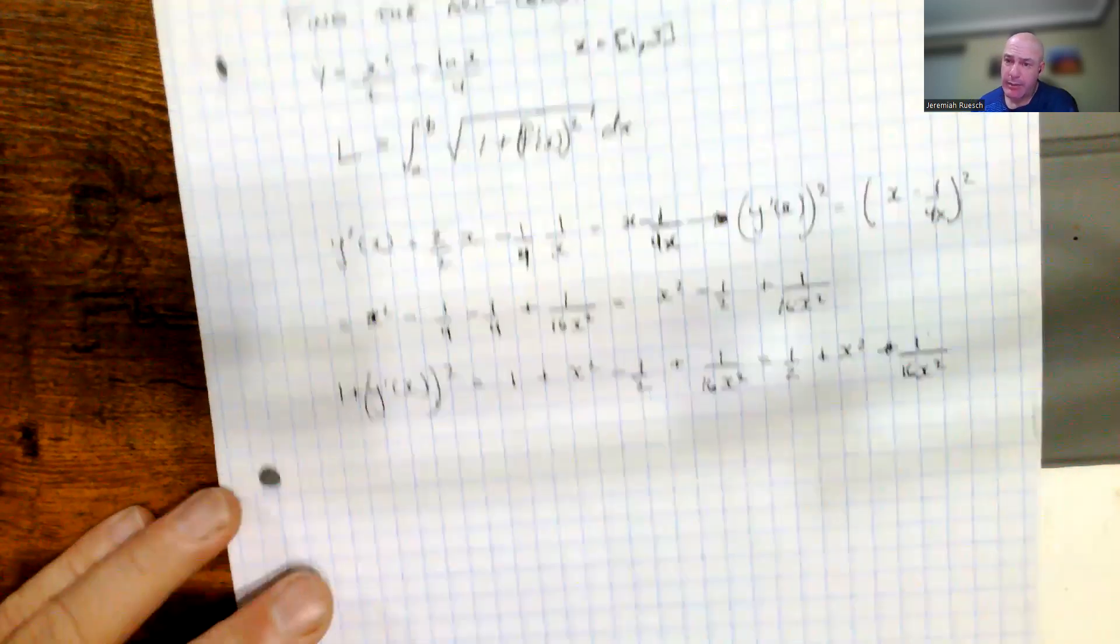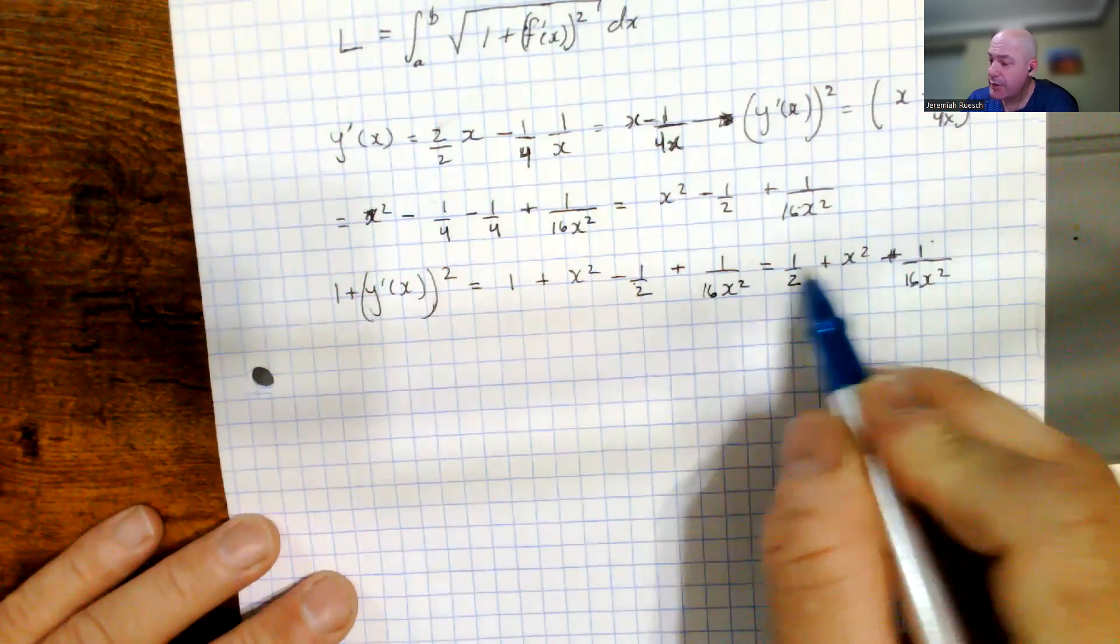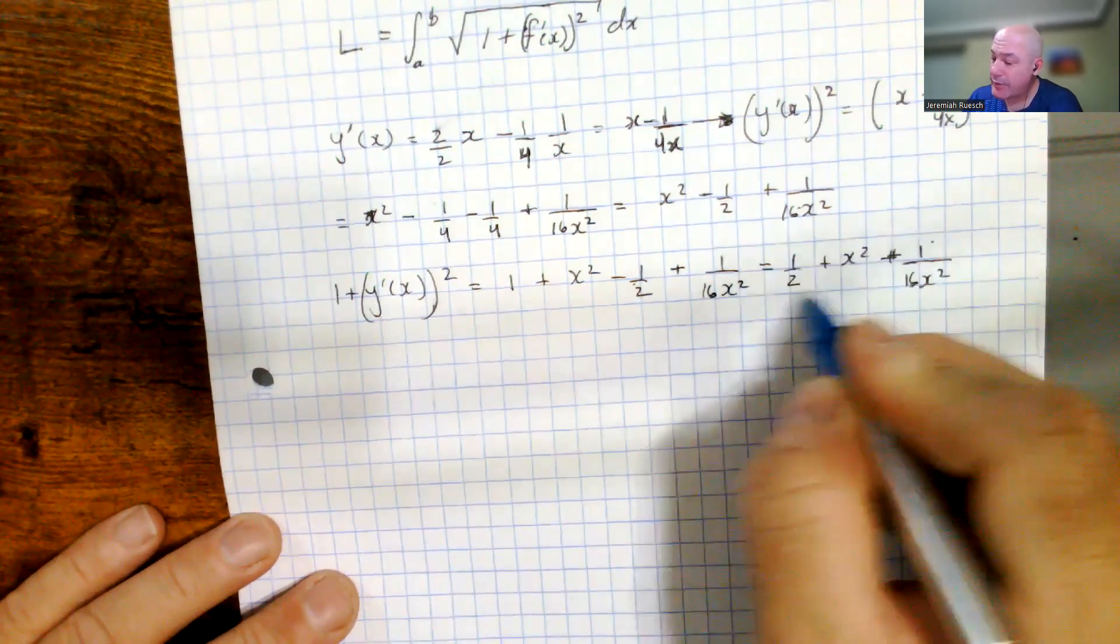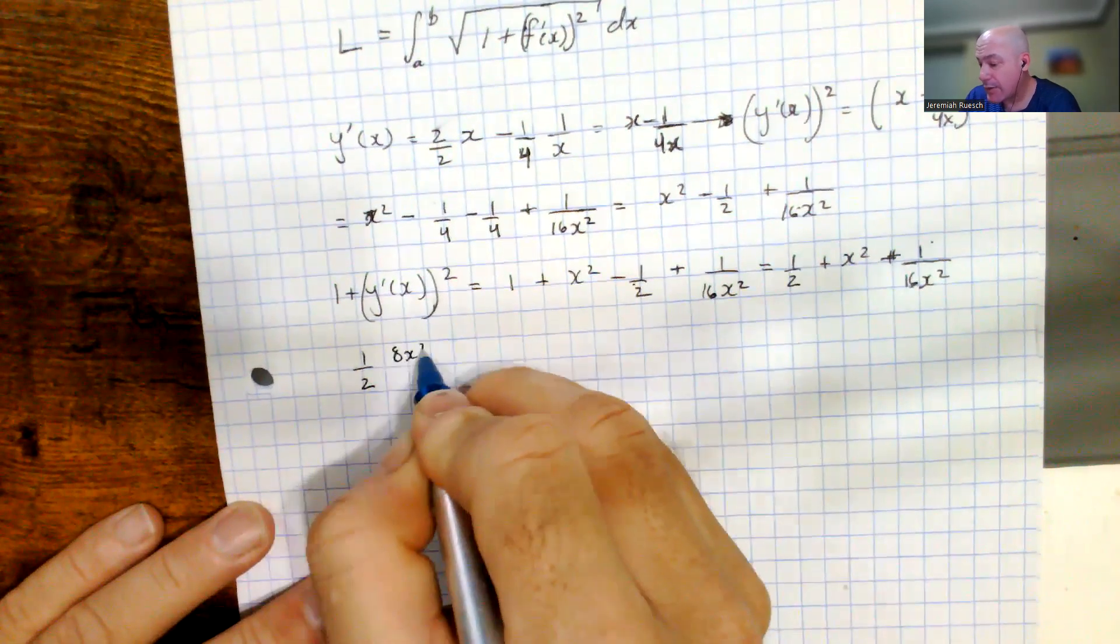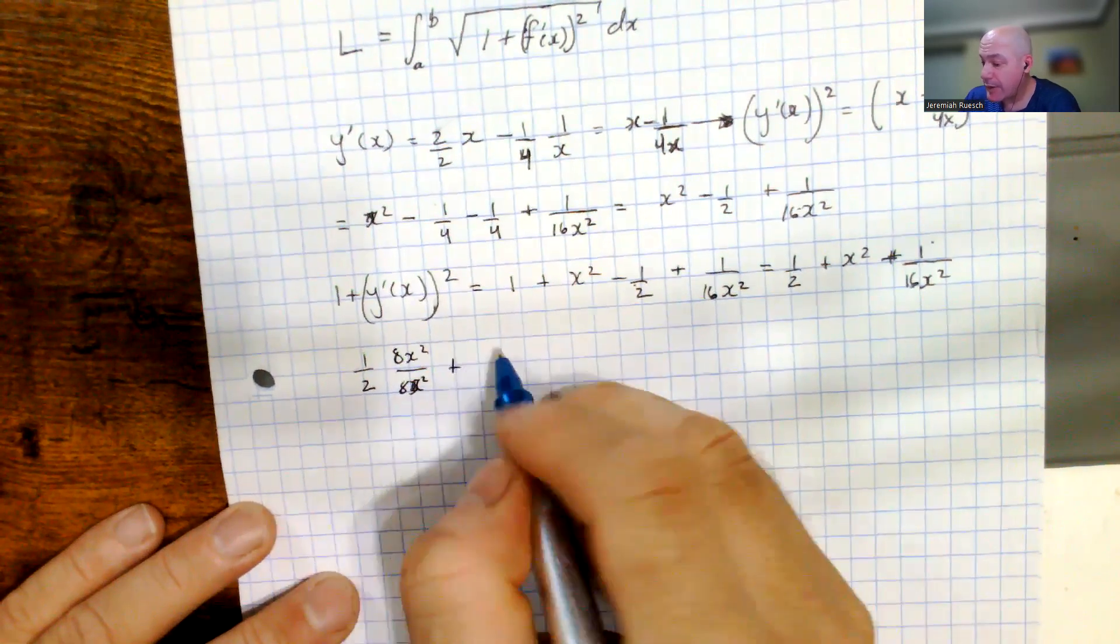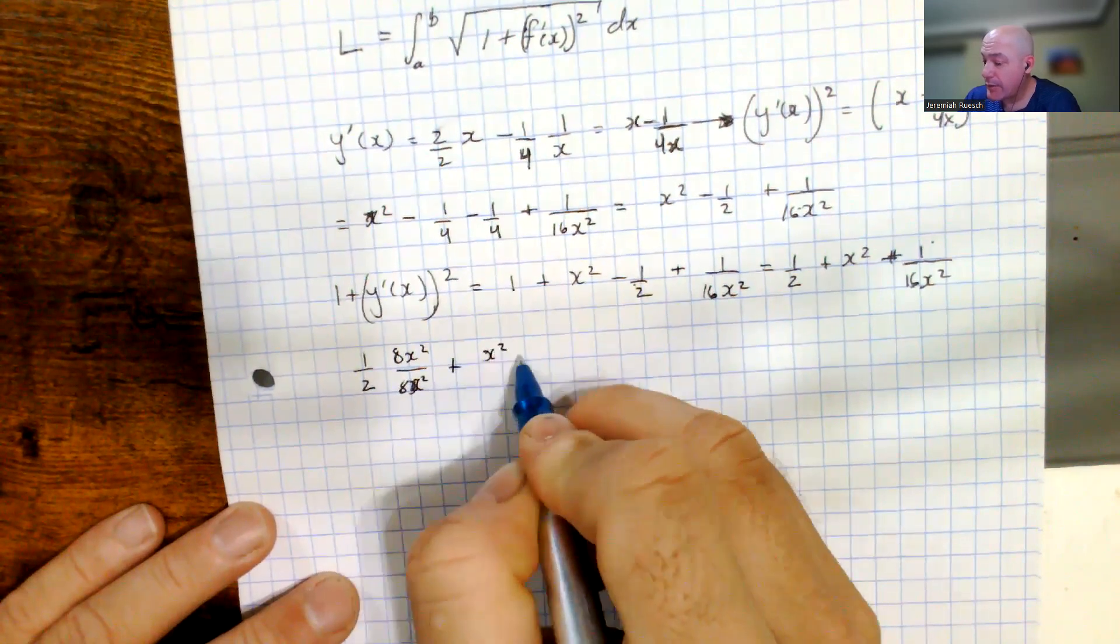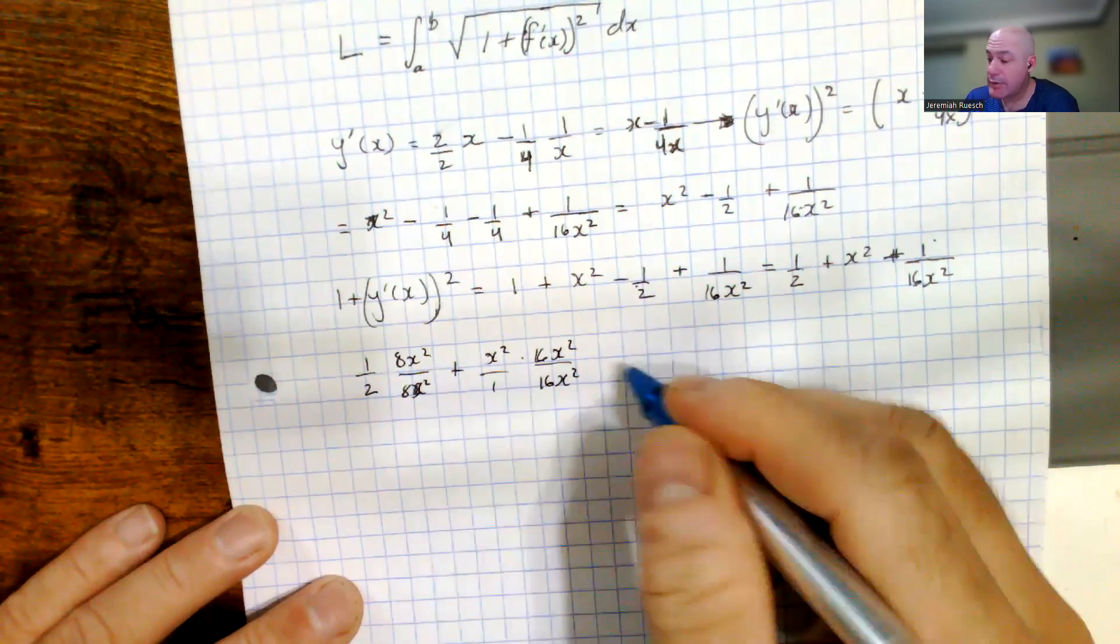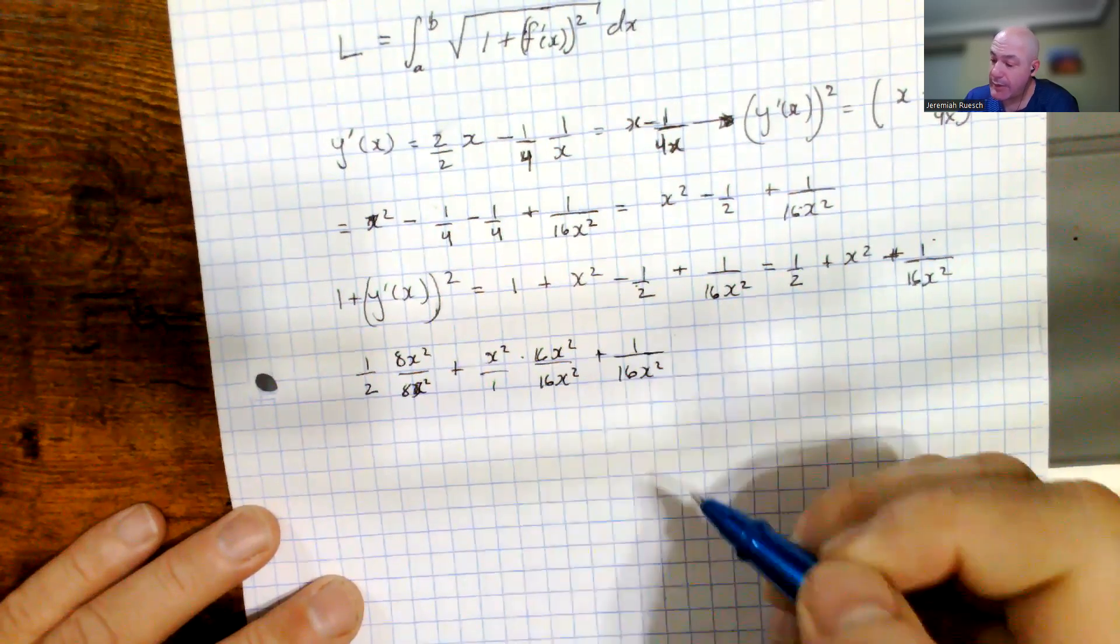And now it looks like maybe the last thing to do would be to get a common denominator. It looks like 16x squared will do it for all of the terms, so if I look at what do I need to multiply these by, I would have, well, 1 half, it needs to be multiplied by 8x squared over 8x squared, plus, well, 16x squared doesn't have either of those, it's going to need a 16x squared and a 16x squared to match the denominators, and then of course the plus 1 over 16x squared, it doesn't need anything, so it's got that.